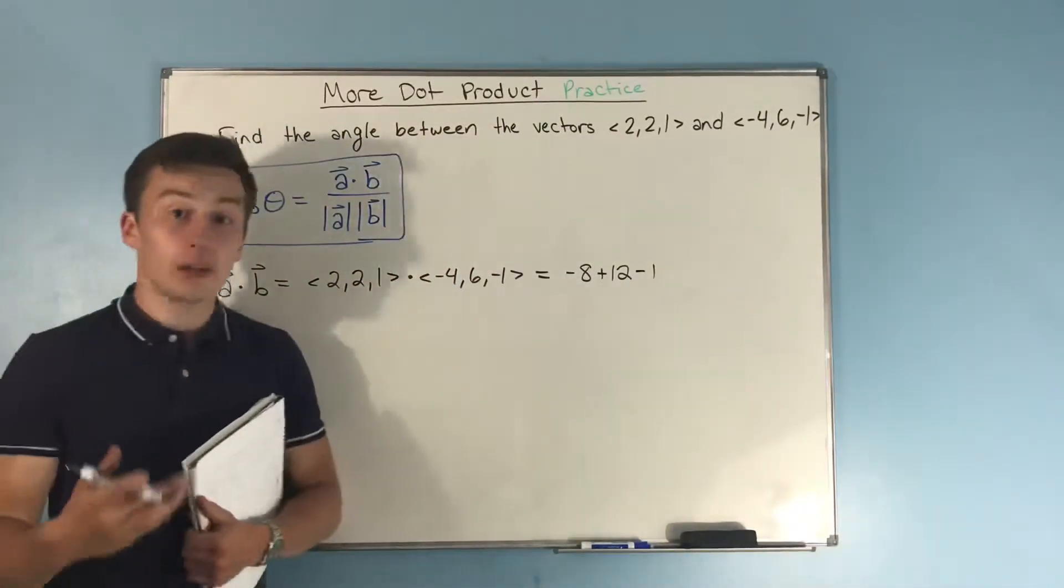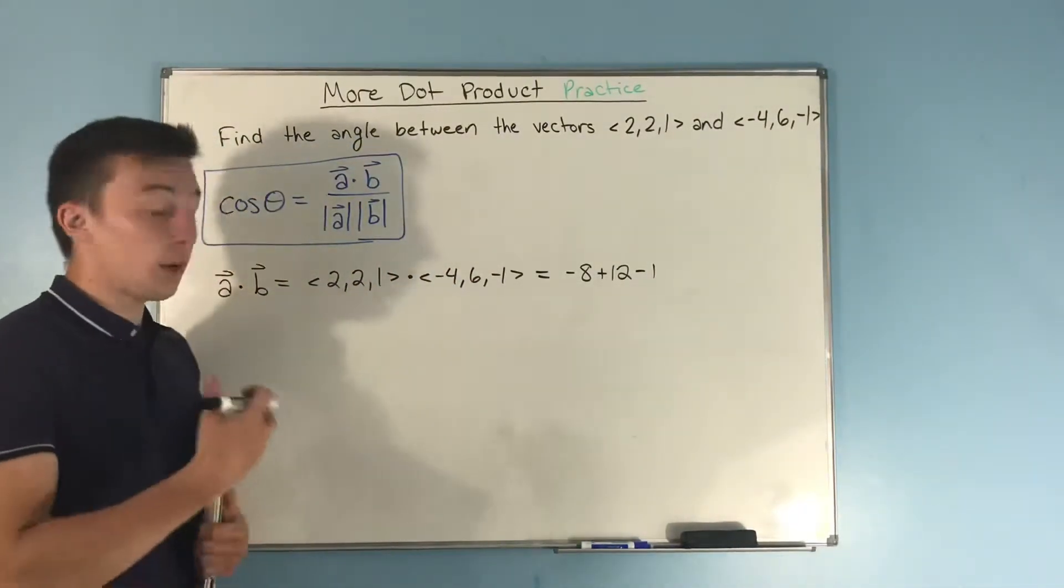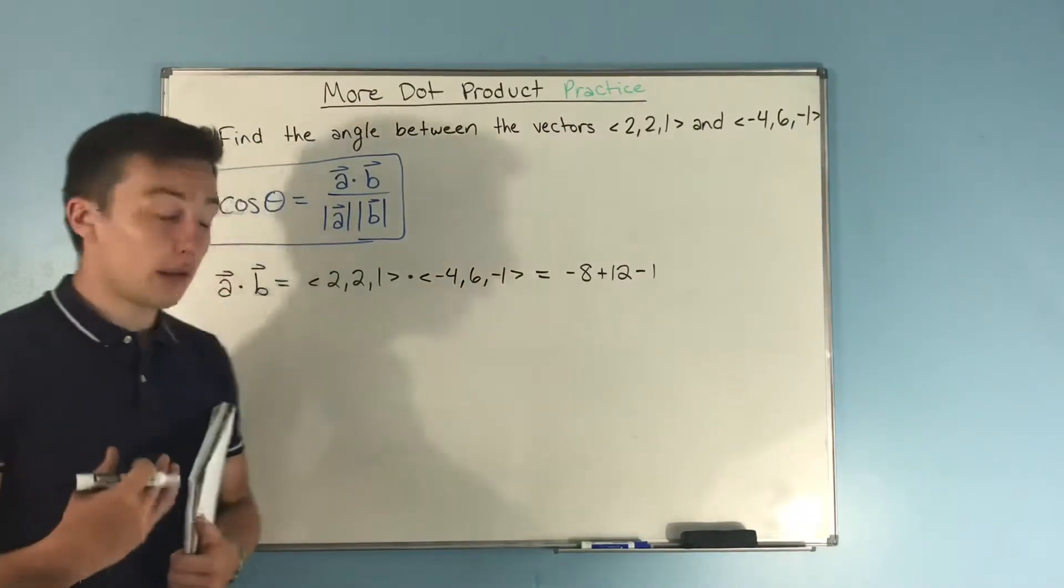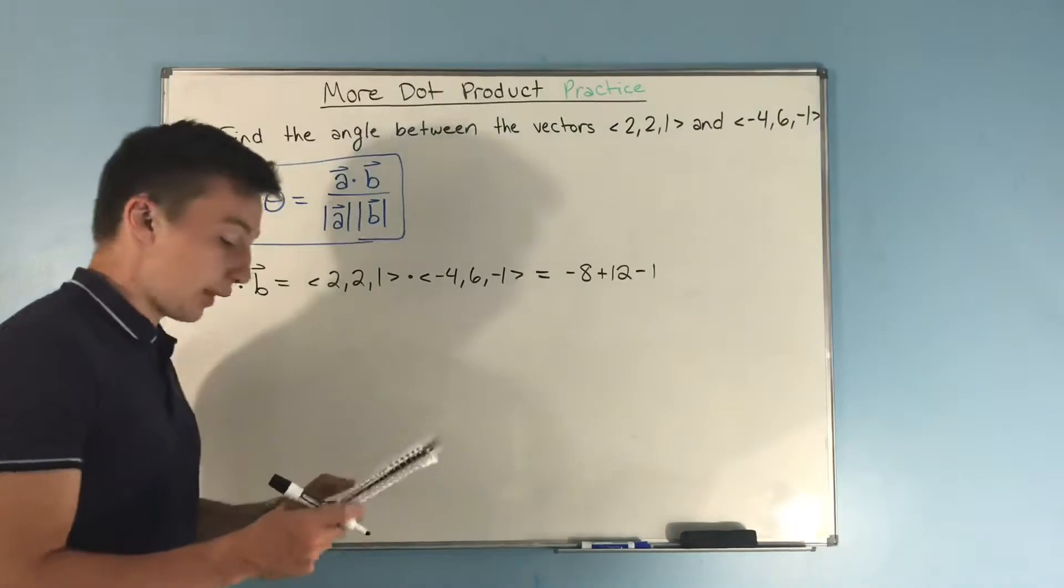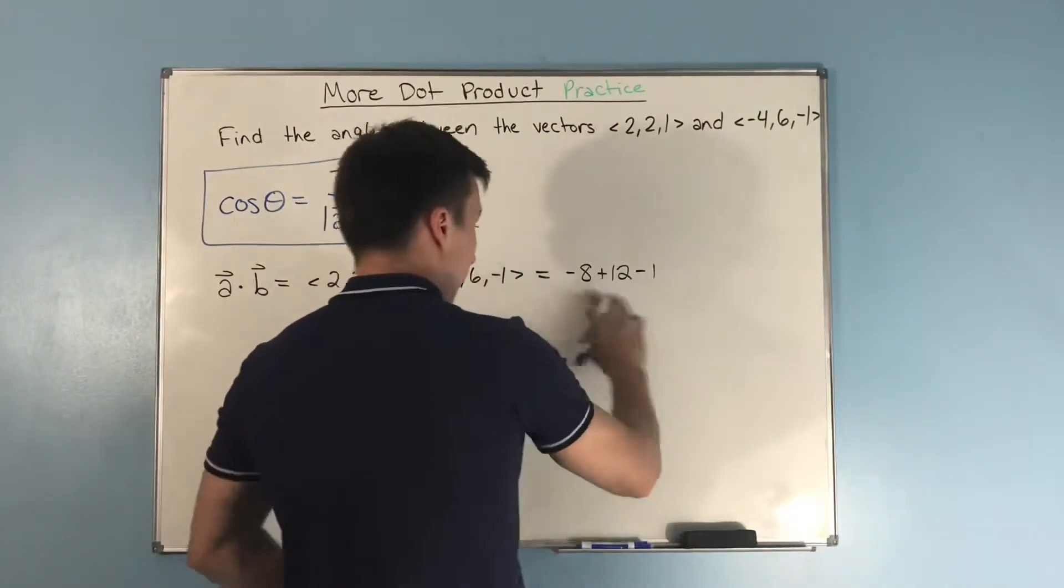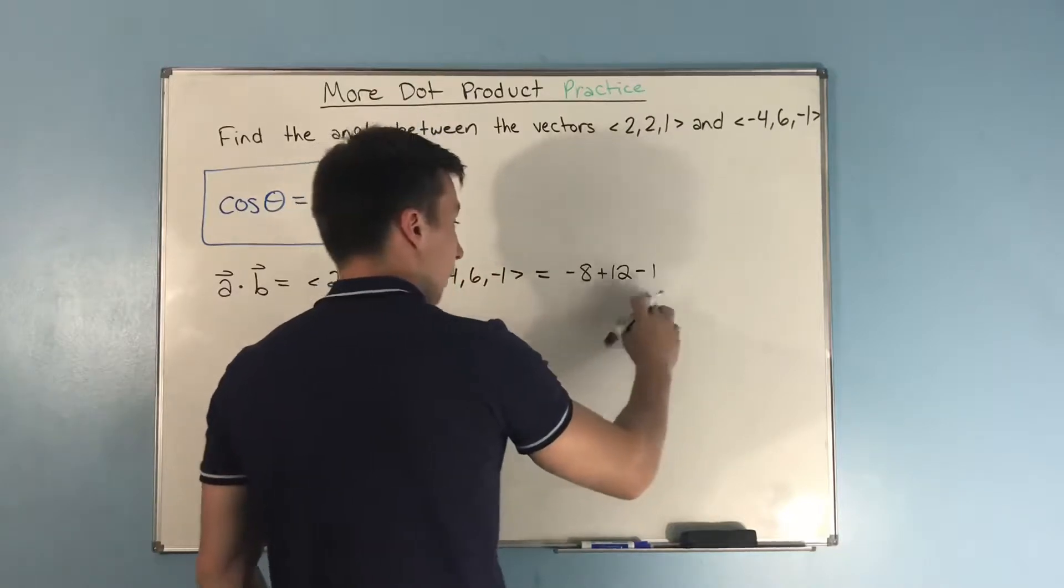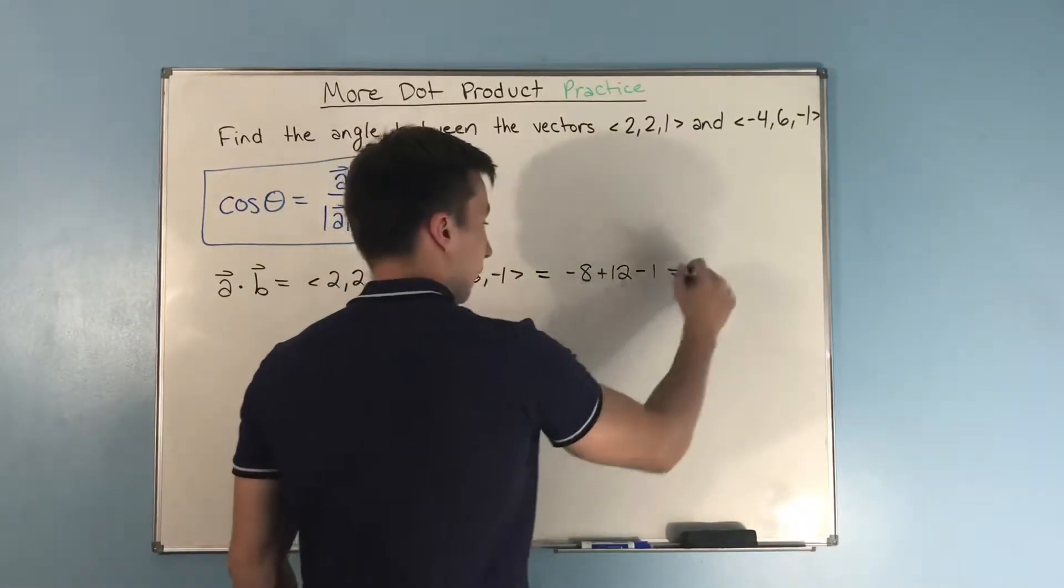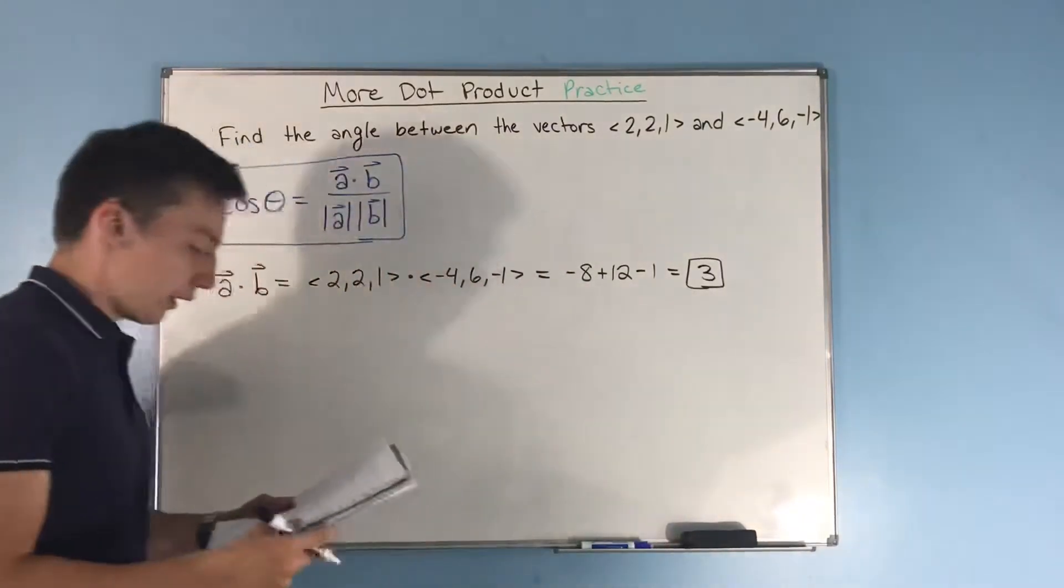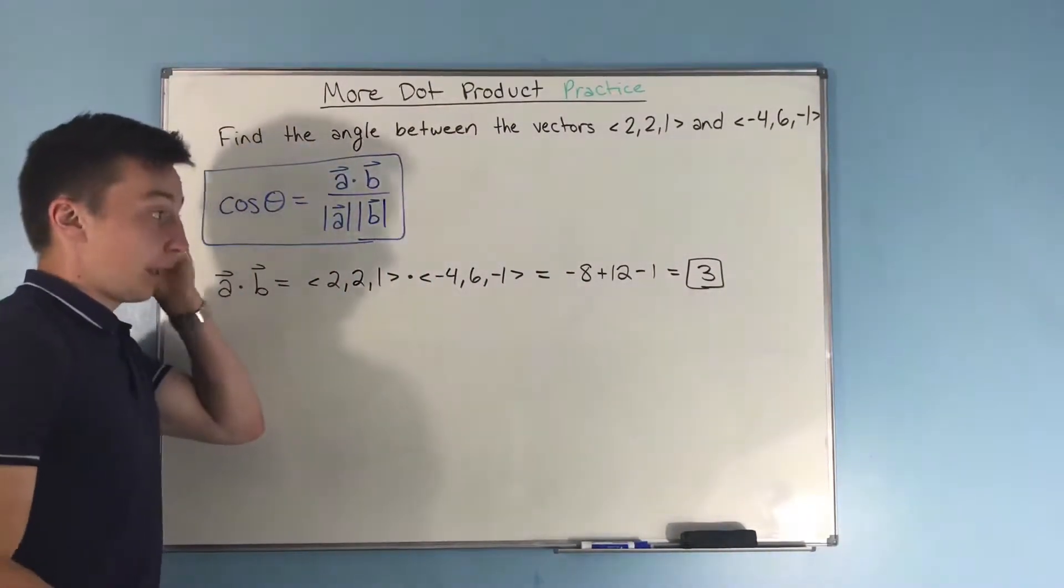If you're still confused on how I'm finding the dot product, definitely check out my video on that. So now we have negative 8 plus 12 minus 1, and that's going to give us a grand total of 3, and that right there is our dot product.